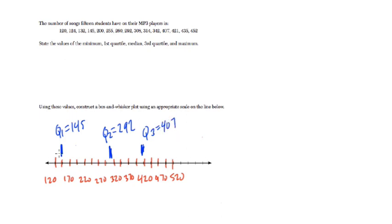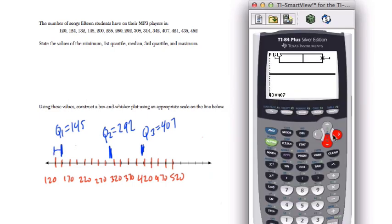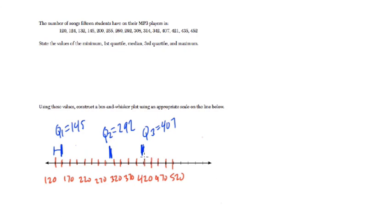And the minimum is 120 right here. And the maximum, I can't remember that, is 452. Okay, so here's 420, 440, 470. 452 is right here. You can label that as 452 equals max. All right, so you just throw the lines in. You set this box up. And you're done.